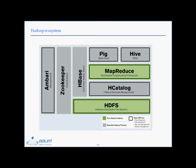Hadoop's distributed file system facilitates rapid data transfer rates among nodes and allows the system to operate uninterrupted in case of a node failure. This approach lowers the risk of system failure even if a significant number of nodes become inoperative.